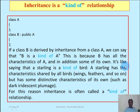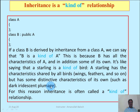It is like saying that a starling is a kind of bird. Every starling has characteristics shared by all birds — wings and feathers. But it also has distinct characteristics of its own, such as dark iridescent color, which is different from other birds.